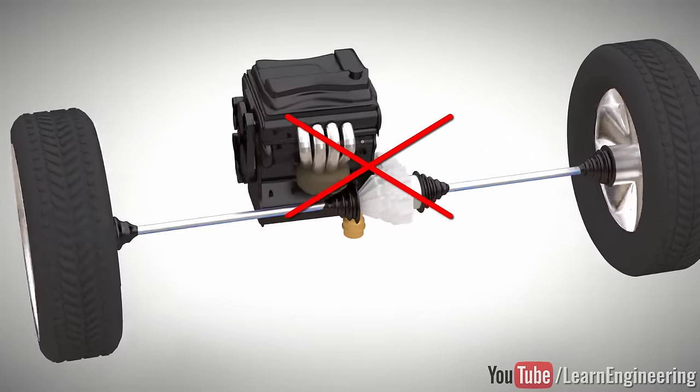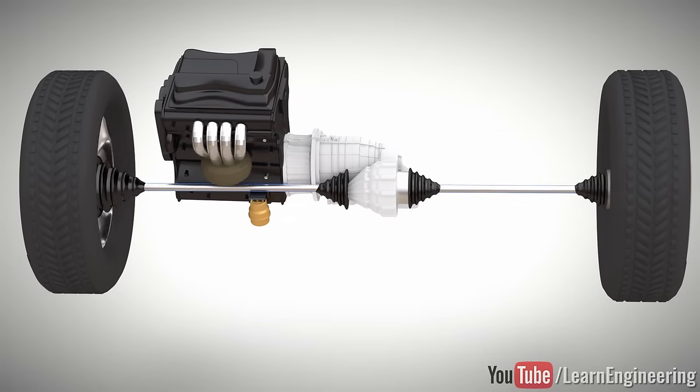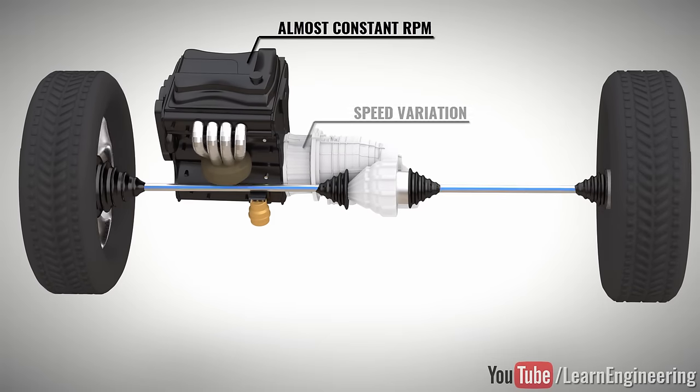Rather, we need a transmission in between, so that the engine's RPM can always be in the maximum efficiency range. The transmission takes care of the speed variation of the drive wheels.